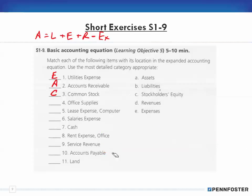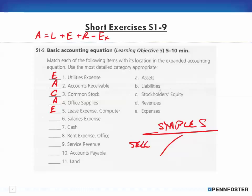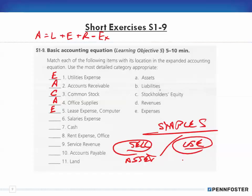You have to think about the intended purpose. So office supplies here is an asset. Lease expense — computer: it has the term 'expense' in it, so we know it's an expense — category E. Here again is the flip side of the office supplies example. Staples sells computers and also uses computers. If selling, it's an asset; if using for themselves, it's an expense. In this case the account is called 'lease expense' because they're leasing the computer.